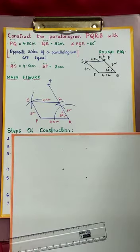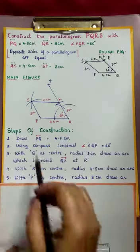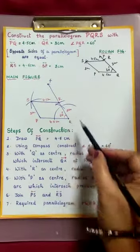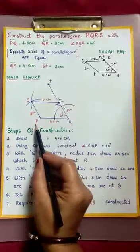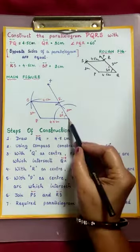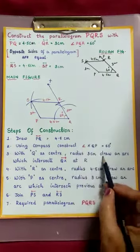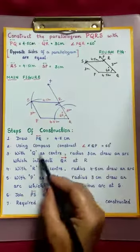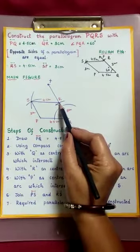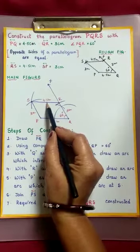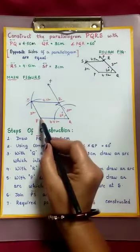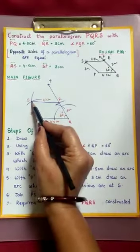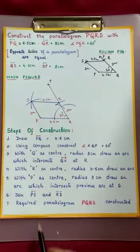Now see the steps of construction. First, draw PQ 4.5 cm. Using compass, construct angle XQP as 60 degrees. With Q as center, taking 3 cm radius, draw an arc which intersects QX ray at R — this is your third point. Next, taking R as center, radius 4.5 cm, draw an arc. Again, with P as center, taking 3 cm radius, draw an arc which intersects the previous arc at S.